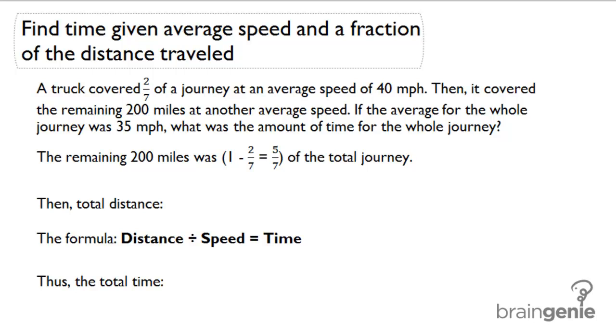Find time given average speed and a fraction of the distance traveled. A truck covered two-sevenths of a journey at an average speed of 40 miles per hour. Then, it covered the remaining 200 miles at another average speed. If the average speed for the whole journey was 35 miles per hour, what was the amount of time for the whole journey?